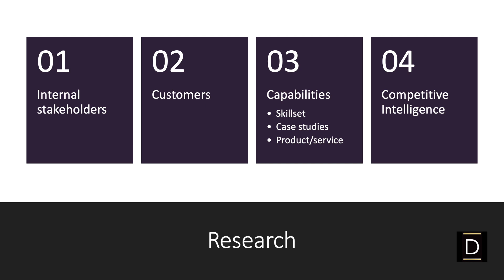The fourth area of research is competition. The first three sources of input are all about your business and your product or service, but your research will be incomplete if you do not understand the sea of competitors around you. You need to understand what their business propositions are, how they are trying to get the attention of your customer, and whether they are honestly better than you. Leverage tools like Buzzsumo, What Runs Where, and Wayback Machine — these will give you factual information around the messaging your competitors are putting out to your prospects and customers. There are also various other techniques you can use to gather competitive intelligence.